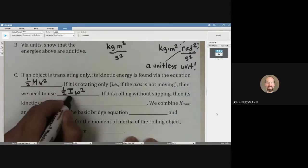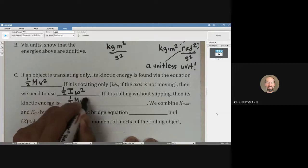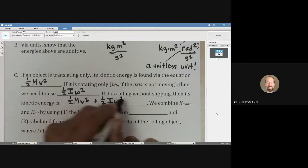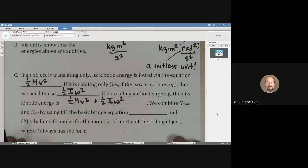If it's rolling without slipping, then its kinetic energy is going to be the sum of these. So anytime we have rolling without slipping, both of those pieces of the puzzle need to be in there.